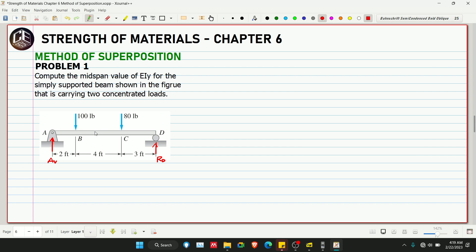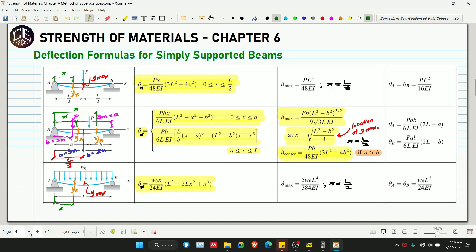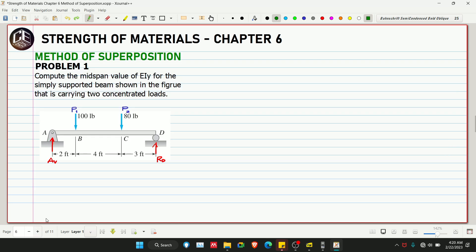Let's consider that our 100 pounds is P1 and our 80 pounds is P2. The 100 pounds is 2 feet from point A and 7 feet from point D. If we use our equation here, the condition states that a should be greater than b. So for P1, our a is 7 feet, this is our a1, and the 2 feet is the b distance because 2 feet is smaller than 7 feet. For the 80 pounds, its a is 6 feet, this is our a2, and this is our b2.